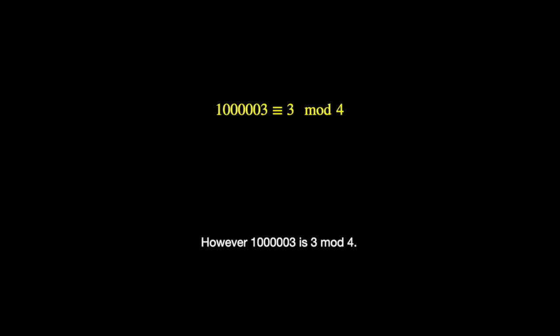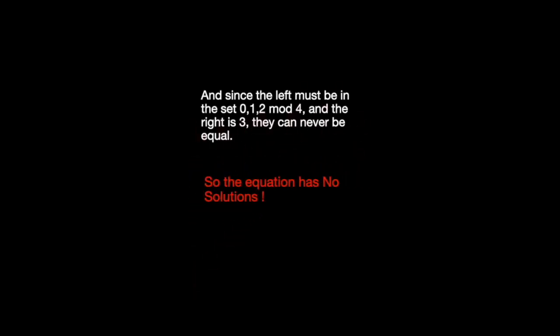However, the right-hand side — a million and three — is congruent to 3 modulo 4. And since the left-hand side must be in the set {0, 1, or 2} modulo 4, and the right is 3, they can never be equal. So this equation has no solutions.